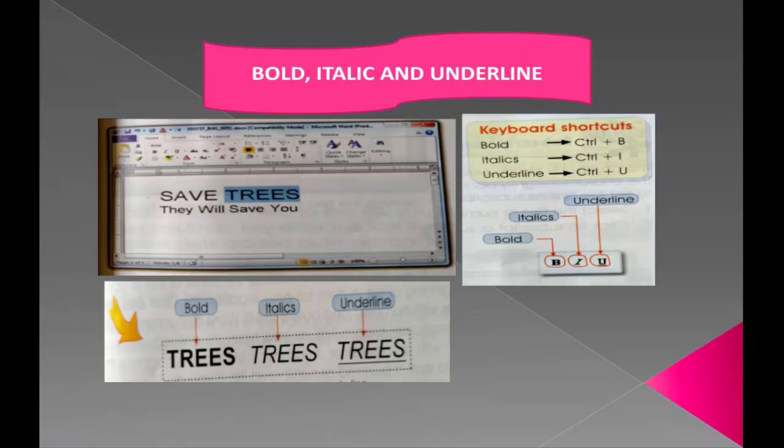In this text or paragraph, I have made text bold, underline, or italic. For example, the line 'Save trees, they will save you' — I have applied bold, italic, and underline to the whole line. First, I will select the text. In every slide I will show you how to highlight and change the color.